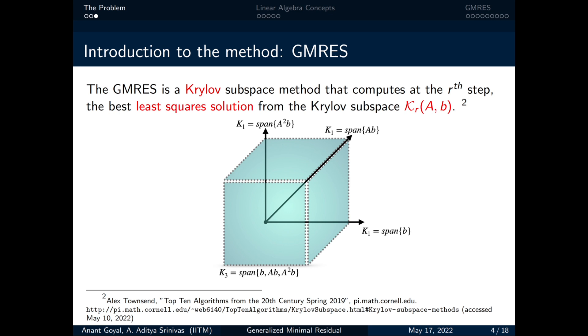as the definition says, the GMRES is a Krylov subspace method that computes at the rth step the best least square solution from the Krylov subspace which is Kr(A,b). To understand it intuitively or to visualize what is Krylov subspace and how the GMRES is finding out solutions we will see a short animation.